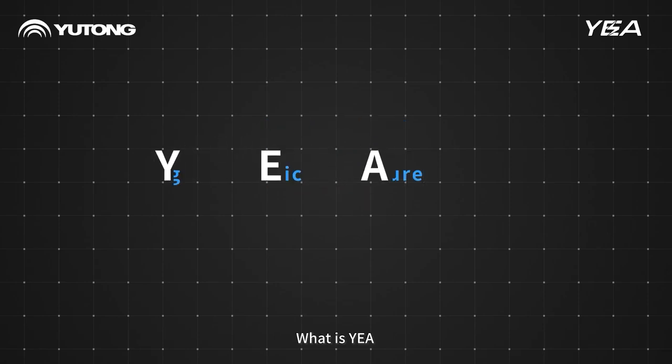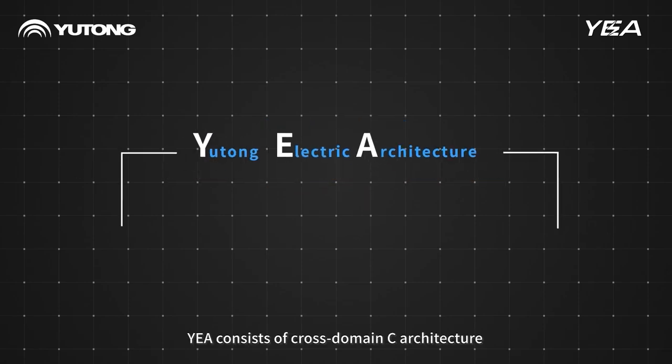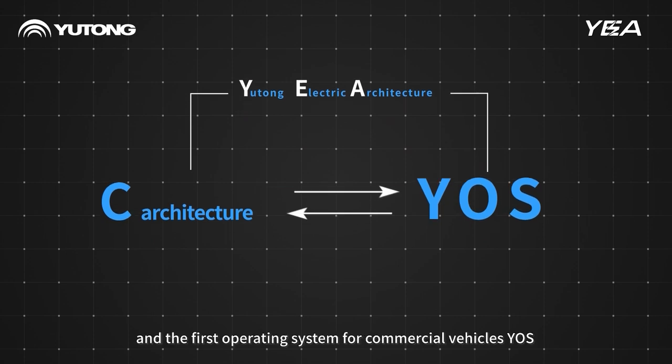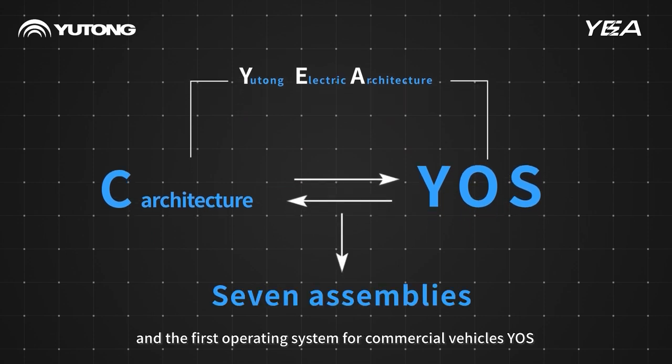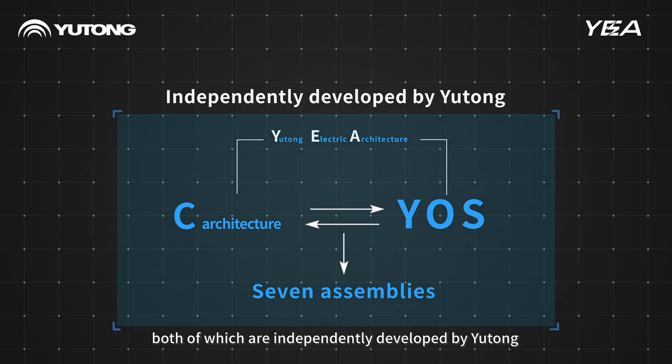What is Y-E-A? Y-E-A consists of cross-domain C-Architecture and the first operating system for commercial vehicles, Y-OS, both of which are independently developed by UTOM.